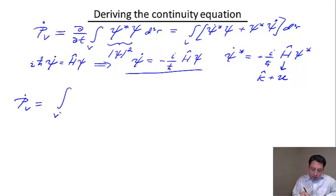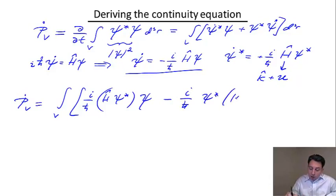So I'm going to have here, instead of Ψ* dot, I'm going to have this guy. So i/ℏ H Ψ*. And here I'm going to have minus i/ℏ Ψ* H Ψ. So if H were a number, these two terms would cancel each other out. And it does happen, as a matter of fact, for the potential energy term.